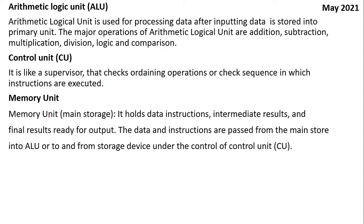Memory Unit — as the name suggests, it holds the instructions. Whatever instruction is there, those instructions are stored by the memory unit. For example, some calculation you wanted the computer to do — 20 plus 20. It does not display the result directly; it stores it somewhere. The result 40 is stored — that is the memory unit. It stores intermediate results as well as final results.